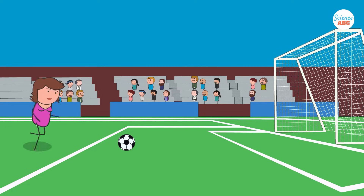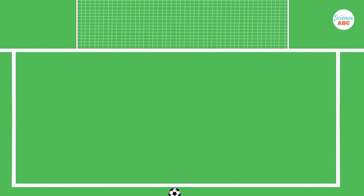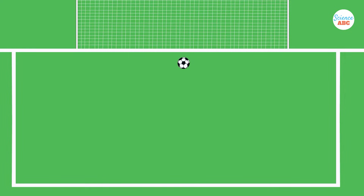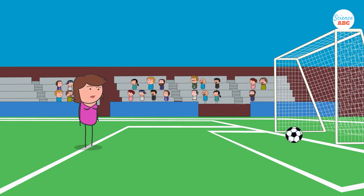Imagine kicking a football towards the goalpost. It takes off from the ground, zooms in towards the target, but suddenly turns for a split second, as if it had hit an invisible object on its flight, but then continues its original flight path and soars between the goalposts.